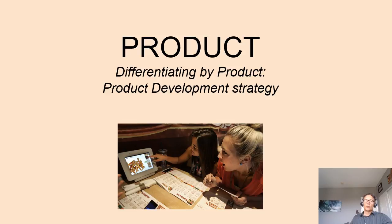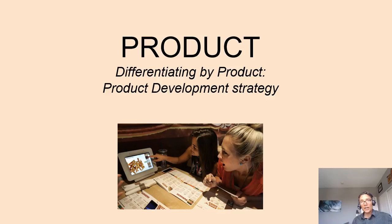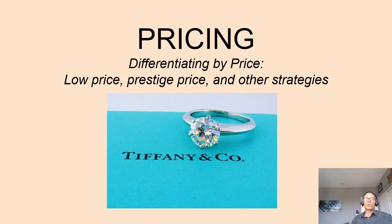The next slides talk about the four P's in more detail. For product differentiation — like the Apple example — here's a burger chain called Stacked where customers can order directly from their table using a tablet and customize their order. Customization and technology is how Stacked, among many burger chains, makes itself different. They're differentiating on product.